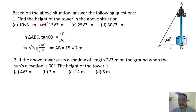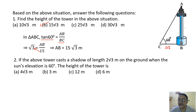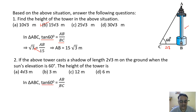Question 2: The tower casts a shadow of 2√3 meter when sun's elevation is 60 degrees. Using tan 60° = AB/BC: √3 = AB/2√3, so AB = 2√3 × √3 = 6 meter. The correct option is option B.